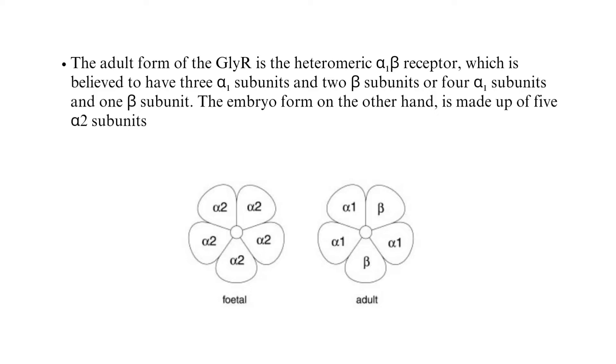The embryo form, on the other hand, is made up of five alpha-2 subunits.